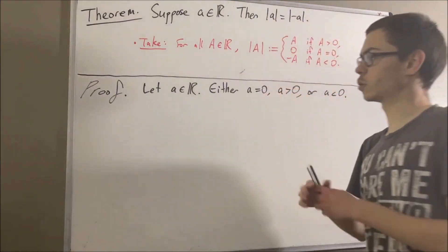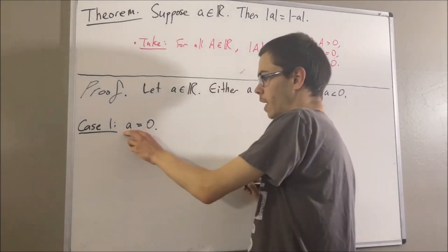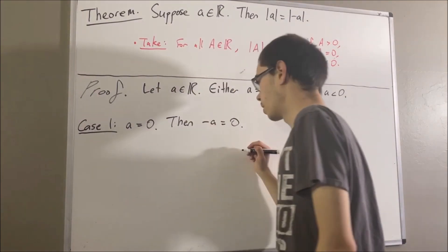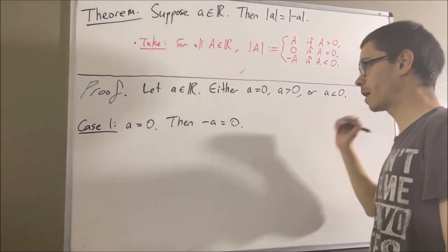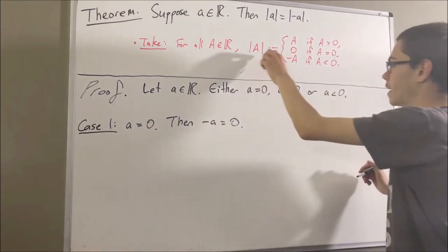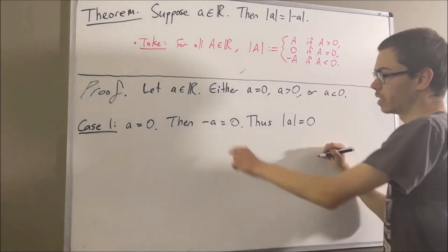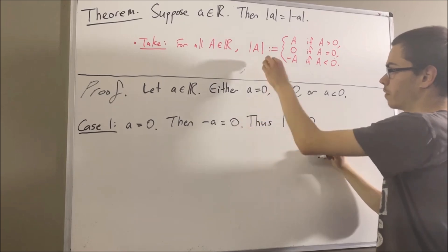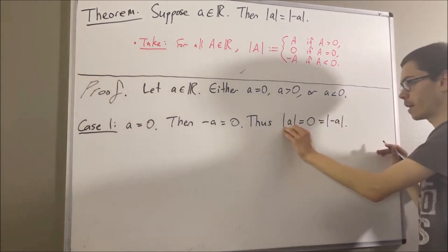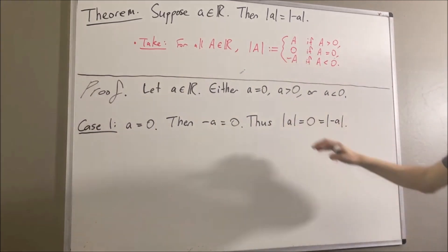Let's start with case one where A is equal to zero. In the case where A is equal to zero, negative A is also equal to zero. Applying the definition of absolute value, since A is equal to zero, the absolute value of A is equal to zero. And similarly, since negative A is equal to zero, the absolute value of negative A is equal to zero. So the absolute value of A is equal to the absolute value of negative A. This completes the case where A is equal to zero.